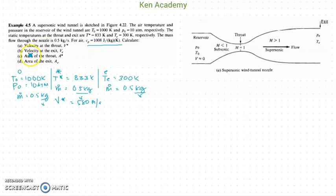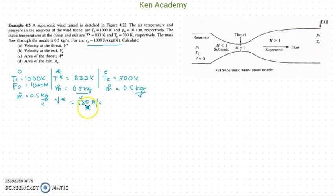For this question we are looking for the velocity at the exit. Take note: the velocity at the exit is supersonic, meaning the Mach number is greater than 1, meaning the velocity in this region should be greater than our throat velocity. The equation we will use to solve for the exit velocity is still the compressible flow energy equation.